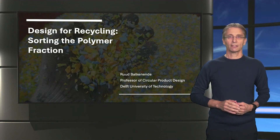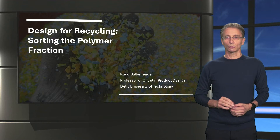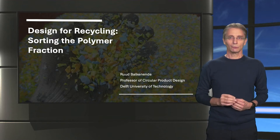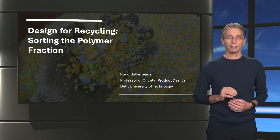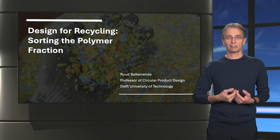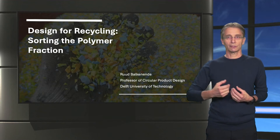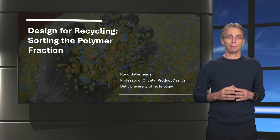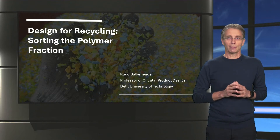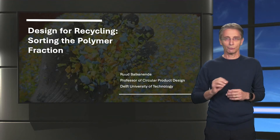In this video, we will take a closer look at how the technologies that recyclers use to sort plastic waste work. Sorting technologies either rely on the differences in physical properties between polymers, such as their density or electrostatic properties, or they use optical instruments that are able to distinguish different polymers. Often a combination of methods is used to achieve the desired result.